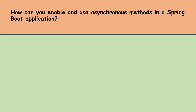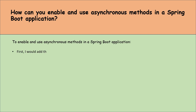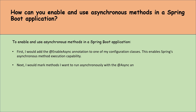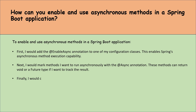Let's move to the next question: how can you enable and use asynchronous methods in a Spring Boot application? First, I would add the @EnableAsync annotation to one of my configuration classes — this enables Spring's asynchronous method execution capabilities. Next, I would mark the methods I want to run asynchronously with the @Async annotation. These methods can return void or a Future type if I want to track the result.